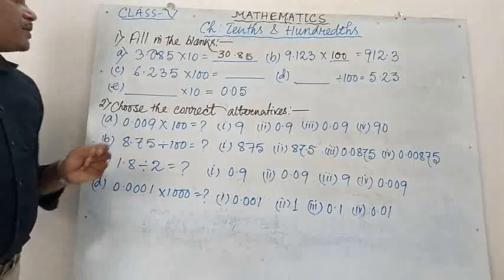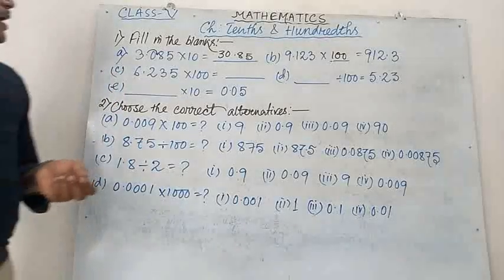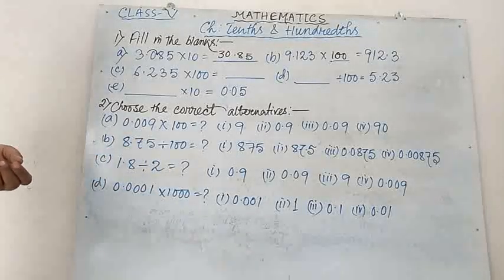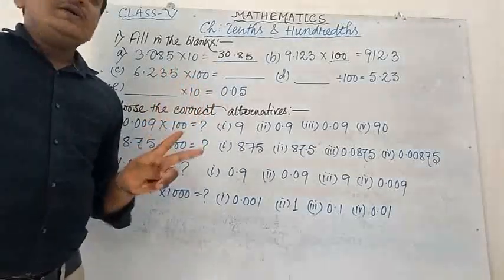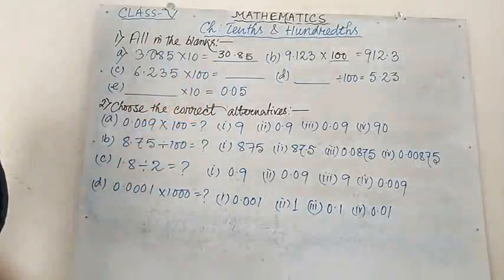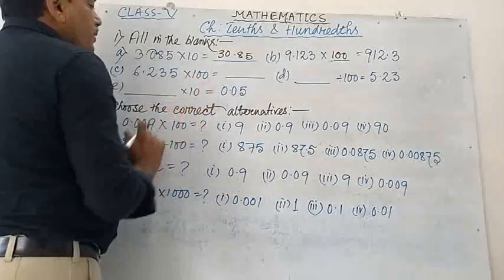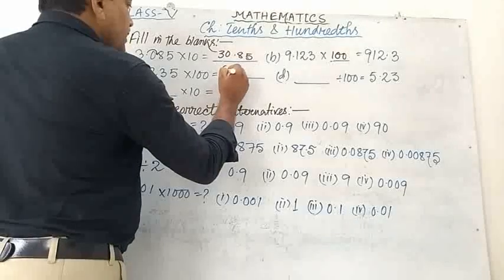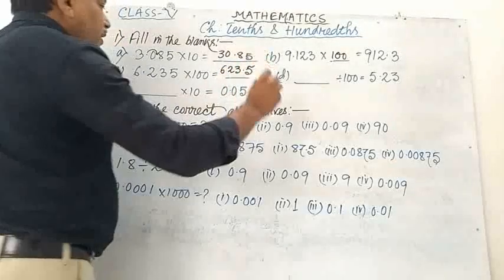Number C: 6.235 multiplied by 100 equals to what? Multiplying by 100 means the point will shift 2 digits to the right. So 6.235 multiplied by 100 becomes 623.5.